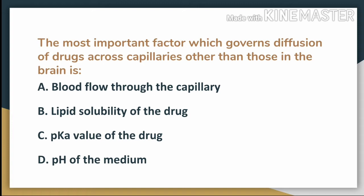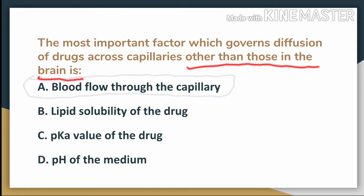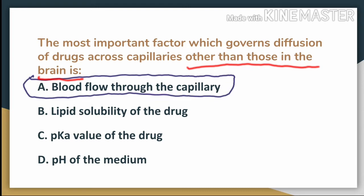The answer is A — blood flow through the capillary. Pay attention to the last words of the question, which are 'other than those in the brain.' If the brain were included, the answer would be lipid solubility of the drug, but the question is different here, so the answer is option A.